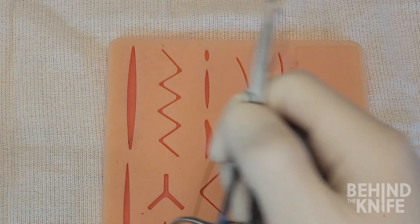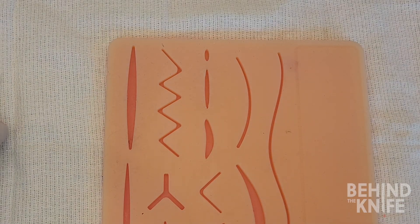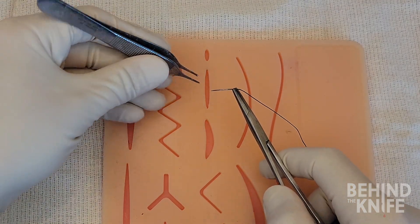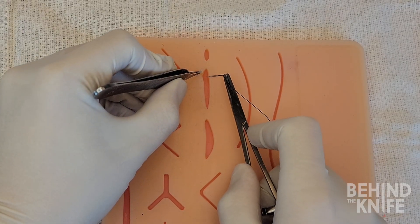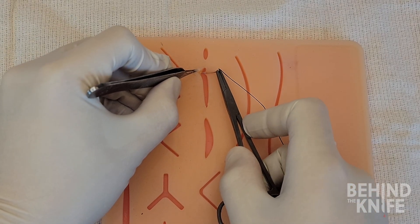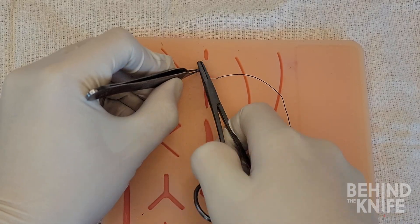We're going to start by picking up our needle drivers and loading our needle into them in the orientation for a forehand throw. The first step involves placing an anchoring stitch about one to two millimeters away from the top of the wound and securing it with a knot.